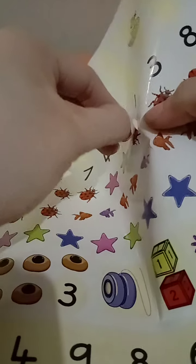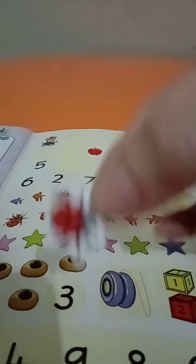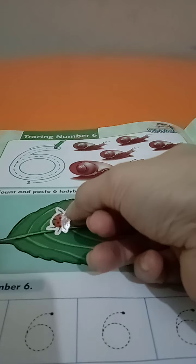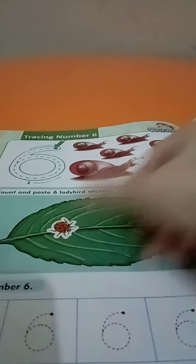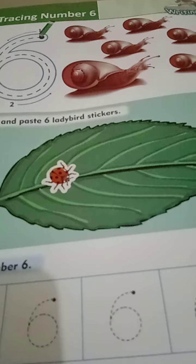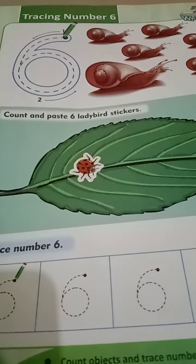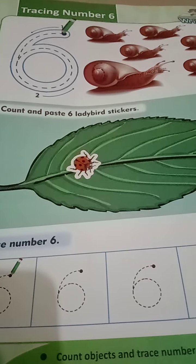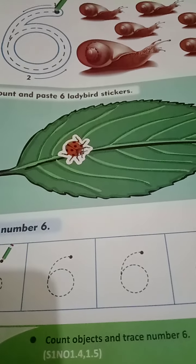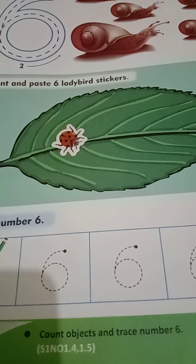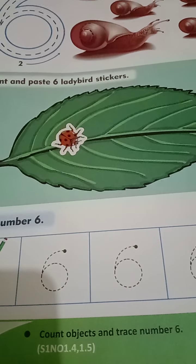Six ladybirds aapko paste karna hai yaha per. Paste the ladybird on the leaf — this way. Okay, done. Count and paste 6 ladybird stickers. You need to paste the stickers on the back side — one is done.